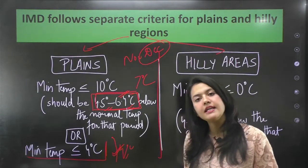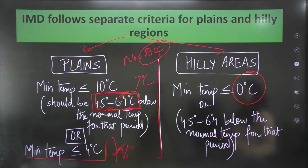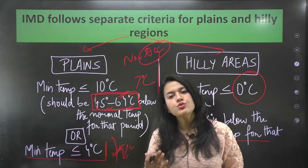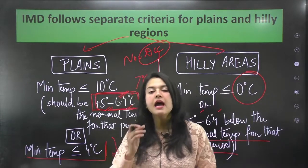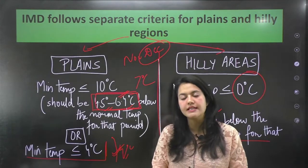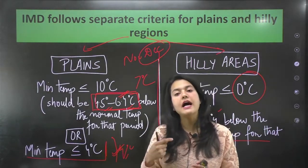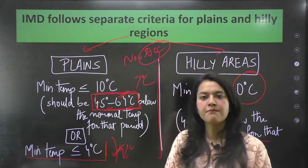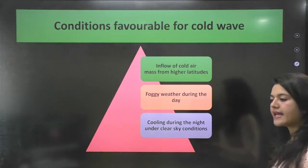For hill areas, if the minimum temperature is lower than 0 degrees Celsius, we say a cold wave exists. Alternatively, if the temperature falls 4.5 to 6.4 degrees below the normal temperature for that period, it is also declared a cold wave in the hilly areas.